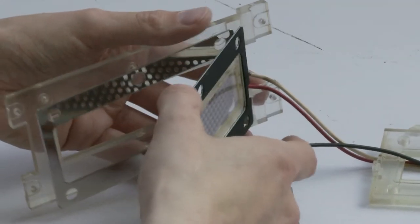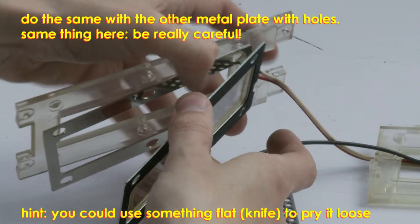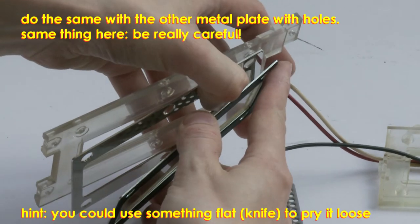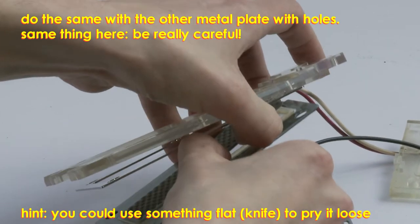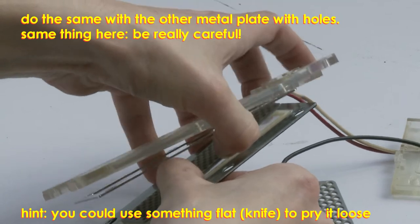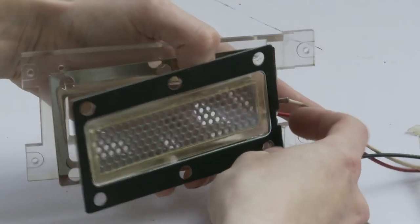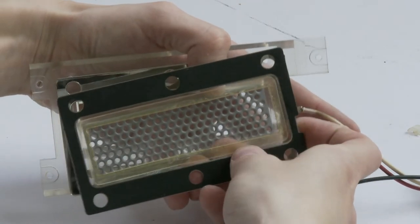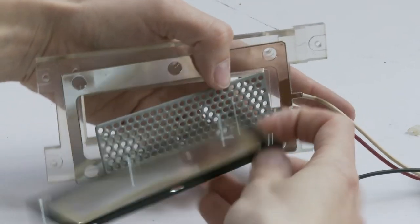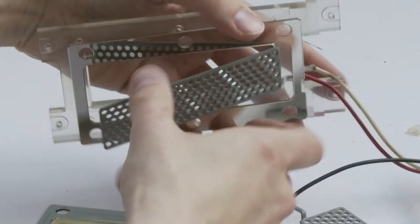Now do the same to the other side. Carefully try to pry off the thin metal plate with holes from the film. Now take all the components apart so that you can clean them easily.